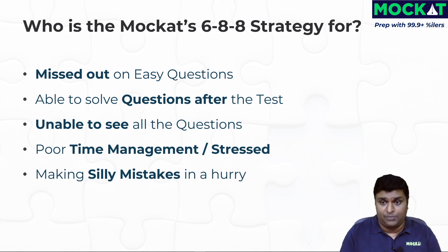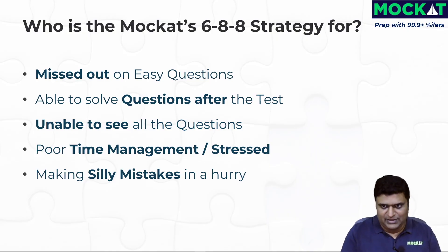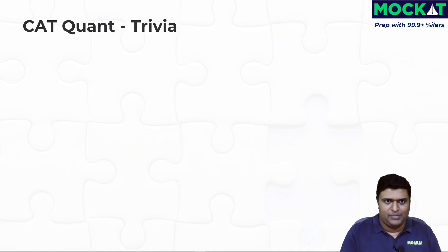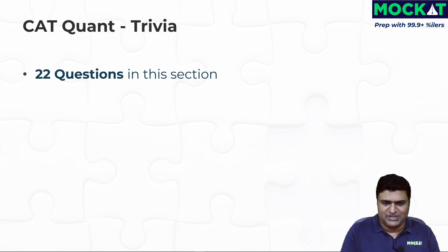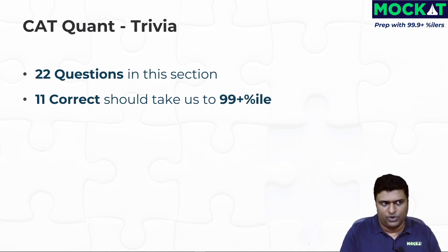This is not the way I approach the exam — with my percentile of 99.99 in quant, I don't need to, because I'll be answering most of the questions. This is a strategy you should adopt to get to the 99th percentile. Now let's understand the CAT quant section: there are 22 questions in the current format (CAT 2021, 2022, and 2023 is expected to follow this). Getting 11 questions correct puts you at 99-plus percentile — so you don't need to answer all of them, just half. Super good.